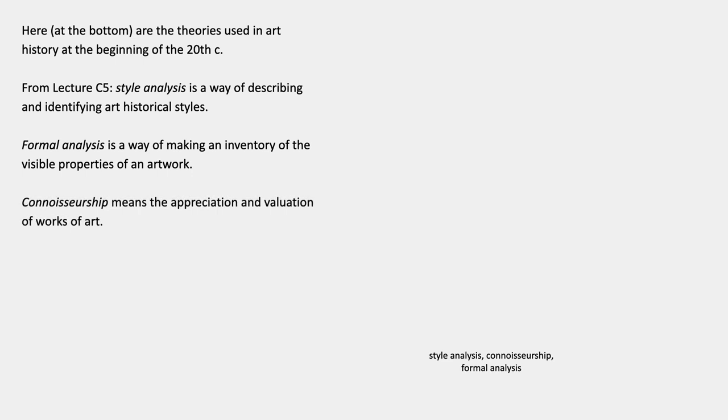First I want to give an overview of the theories we've been looking at. Down at the bottom are the theories used in art history at the beginning of the 20th century. From lecture 5: style analysis is a way of describing and identifying art historical styles; formal analysis is a way of making an inventory of the visible properties of an artwork; connoisseurship means the appreciation and evaluation of works of art, often non-verbally. This is what you would have learned in art history classes around 1910 to 1920, and I placed these at the beginning partly because they're foundational.